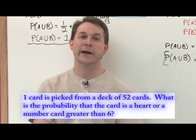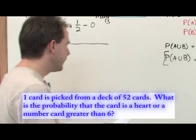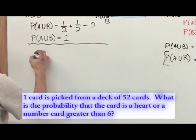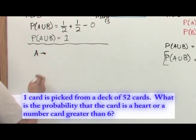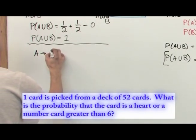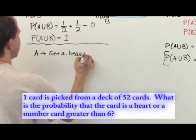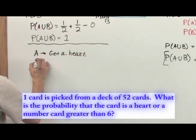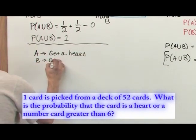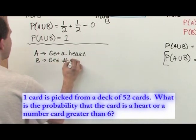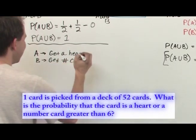The very first thing I do is I label my events. Event A is you get a heart, and event B is you get a number card, so no jacks, kings, or queens, just a number card greater than six.